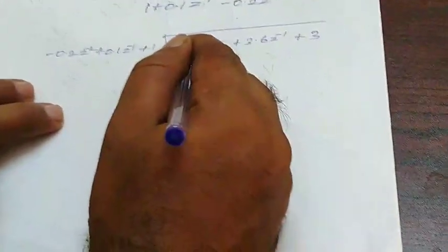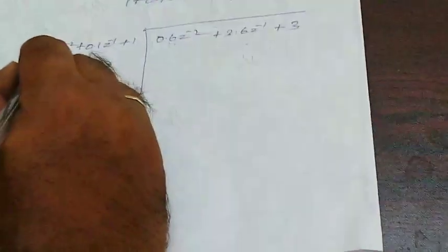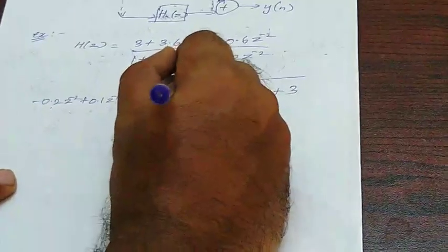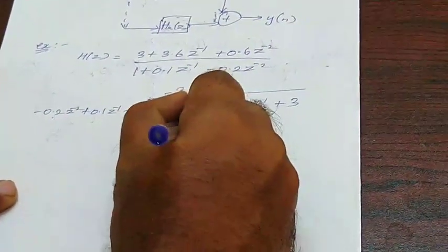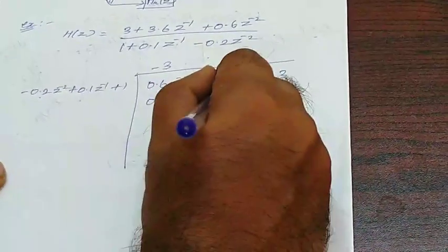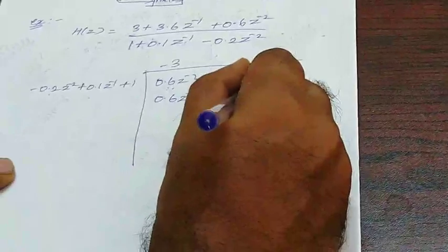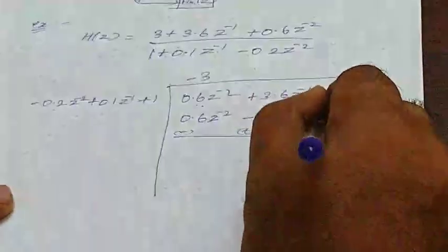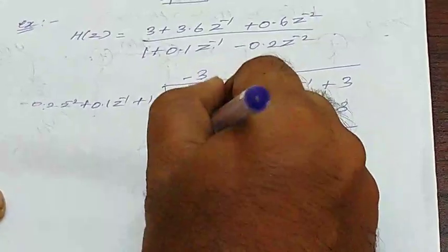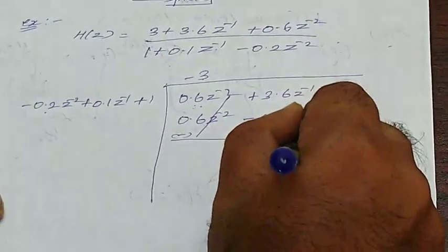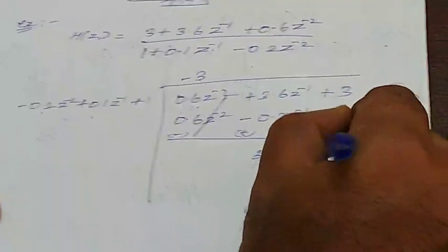Here you have to produce 0.6. Multiply by minus 3 means you will get 0.6. So, minus 3 times 0.6 z power minus 2, then minus 3 into 0.1 you will get minus 0.3 z inverse, then minus 3 into 1 you will get minus 3. Now change the signs here. These two becomes cancelled and here you are getting 3.9 z inverse and here we are getting 6.